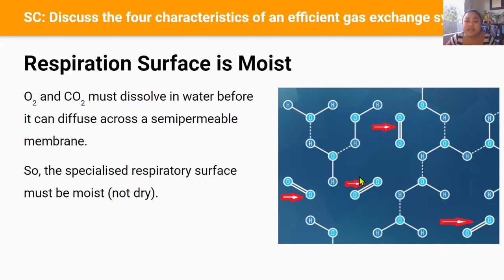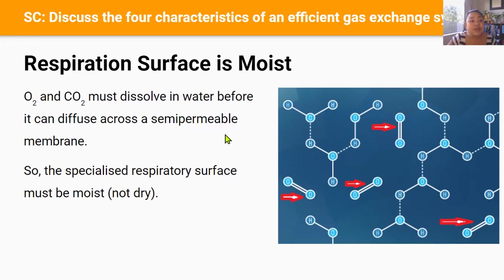But for crickets and humans, they have to worry about keeping their gas exchange surface moist. Without a moist respiratory surface, oxygen and carbon dioxide won't be able to diffuse across the respiratory surface because there's no water to dissolve into first, and this stops gas exchange.